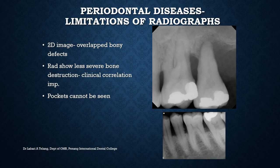In the case of periodontal diseases, there are certain limitations of radiographs. Plain radiography is a two-dimensional image, so overlapping bony defects may make bone destruction appear less severe than it is — clinical correlation is very important. Also, pockets cannot be seen on radiographs as they are soft tissue structures. What you can assess is the amount of bone destruction that has occurred, for example vertical bone loss versus horizontal bone loss.